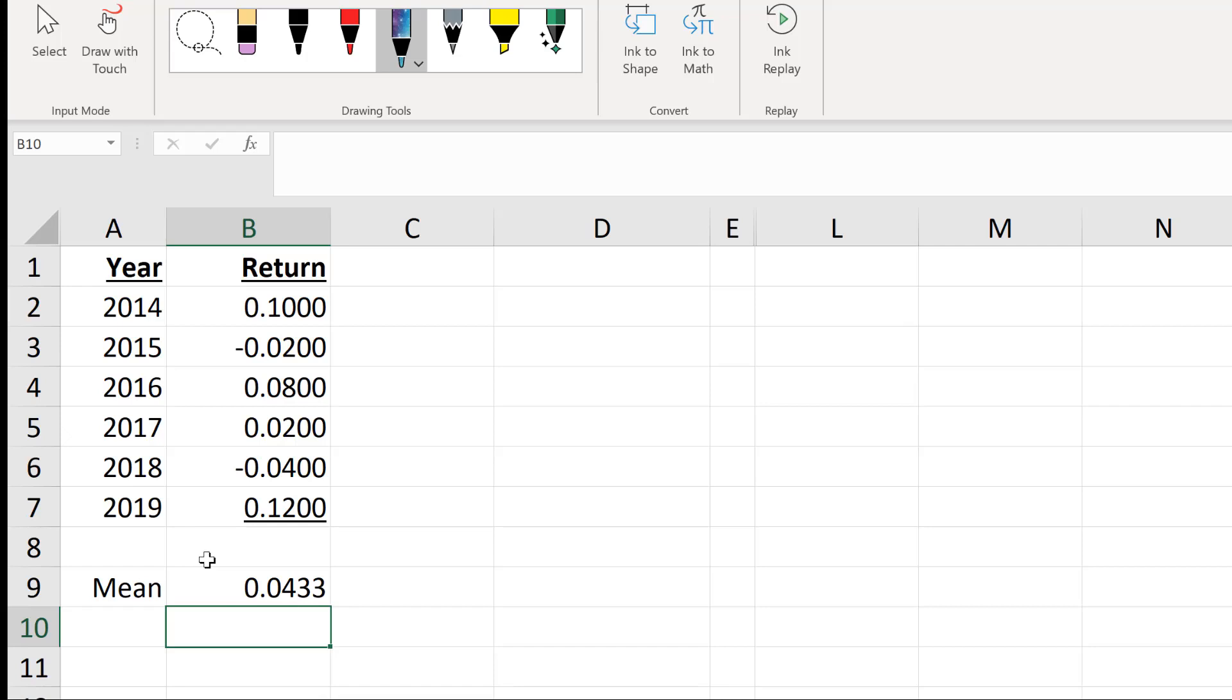Calculate that. We see an average return or an expected return of 4.33%. You can kind of eyeball this distribution of returns here, and you can imagine 4.33% is kind of being in the middle of that. We've got the expected return estimate done. The next thing we need to do is estimate the variance.